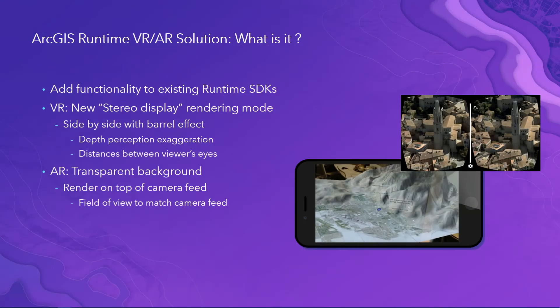So what exactly are we doing here? To support VR, we're supporting a stereo rendering mode. You can take a 3D scene, convert it to a stereo viewing mode, and then view it in a dedicated headset. Or if you want to make augmented reality applications, you can make the background of your scene transparent, and that way you can overlay your scene on top of what the front-facing camera sees to augment the reality.